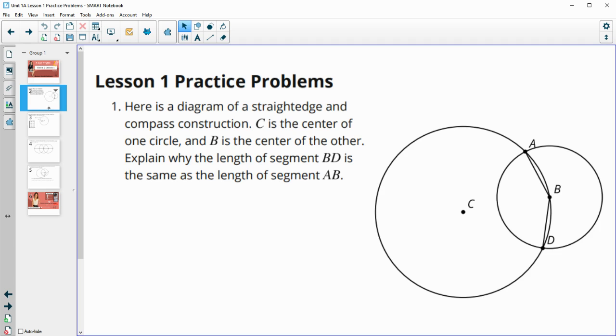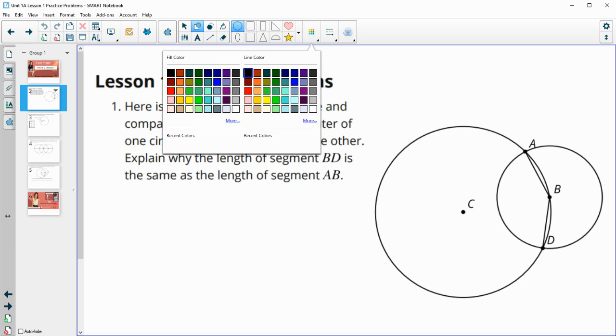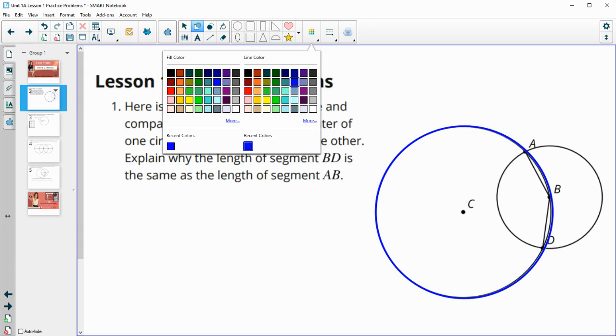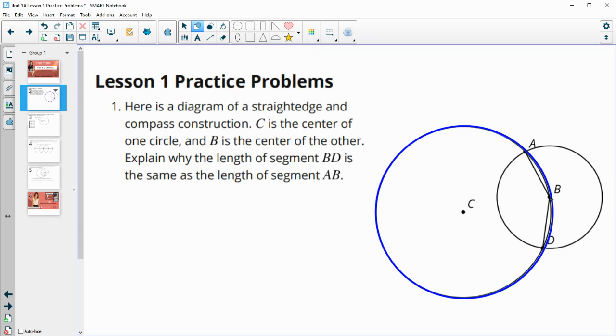Number one says here's a diagram of a straightedge and compass construction. C is the center of one circle, so let me get that drawn on here so we can look at it. So C is the center of this circle. B is the center of the other circle. The orange circle is centered at B.